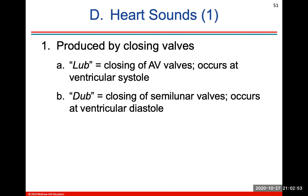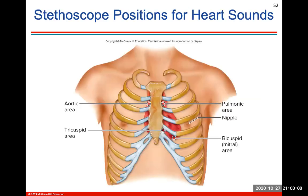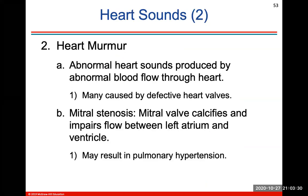The AV valves are located between the atria and ventricles, and semilunar valves are located between the ventricles and arteries leaving the heart. Heart sounds are produced by the closing of the valves. The lub sound is the closing of the AV valve at ventricular systole, and the dub sound is the closing of the semilunar valves at ventricular diastole. A heart murmur is an abnormal heart sound produced by abnormal blood flow, often caused by a defective heart valve.